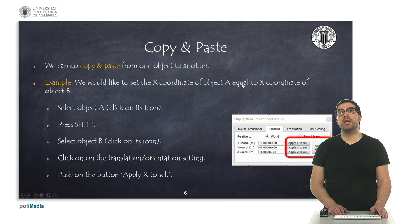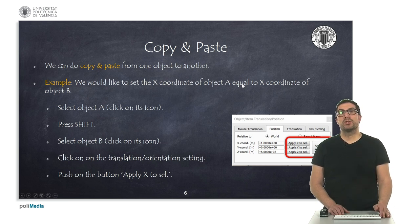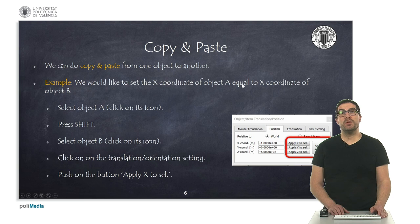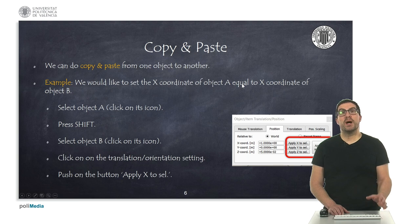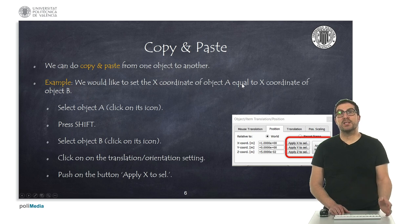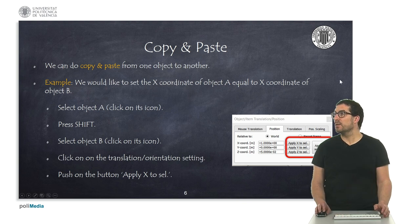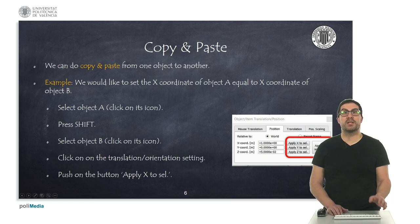Sometimes we are interested in aligning one object with respect to another — for example, matching its height or a given orientation. What we can do is copy and paste the coordinates from one object to another. You need to first select the object you want to move, then press the shift key and select the object you want to align it to. Then access the translation or rotation dialog box and select which coordinate you want to apply. You can select them individually or apply all coordinates at the same time.